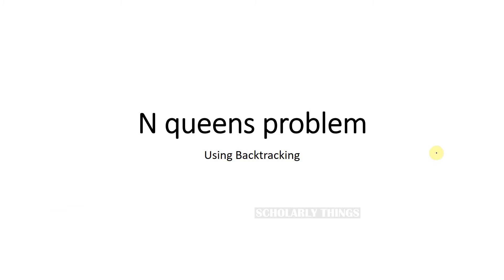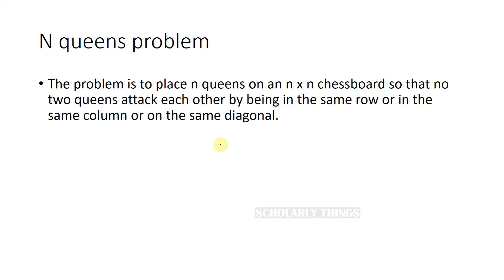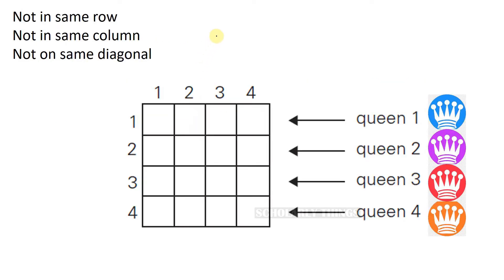The N-Queens problem is a classic example where we can apply backtracking. The problem is to place N queens on an N×N chessboard so that no two queens attack each other — by being in the same row, the same column, or on the same diagonal. For N=1 we have a trivial solution; for N=2 and N=3 we cannot find a possible solution, so let us consider N=4.